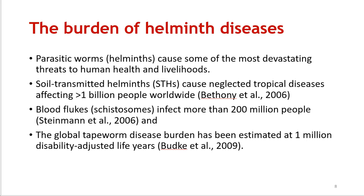Soil-transmitted helminths, abbreviated as STH, are one of the primary causes of these disasters and they cause neglected tropical diseases that affect a billion people worldwide. Blood flukes infect more than 200 million people, and tapeworms actually lead to about a loss each year of a million hours of work.